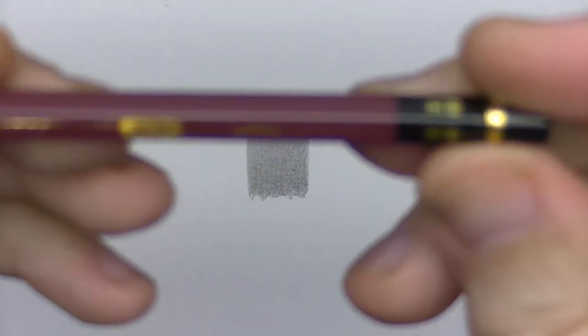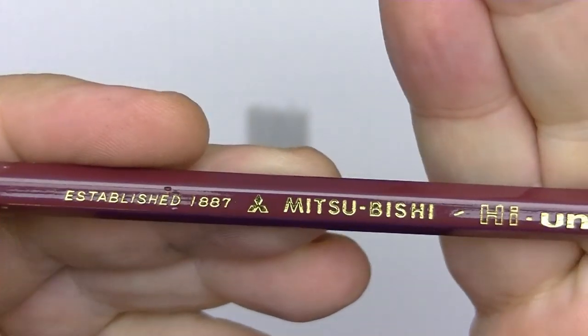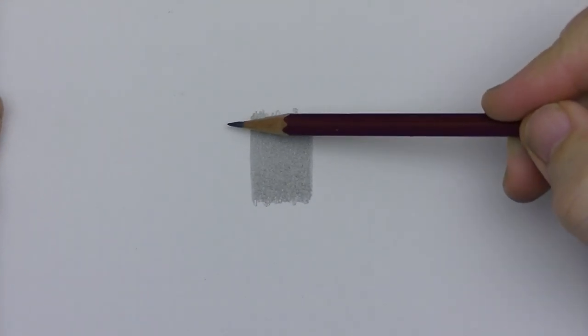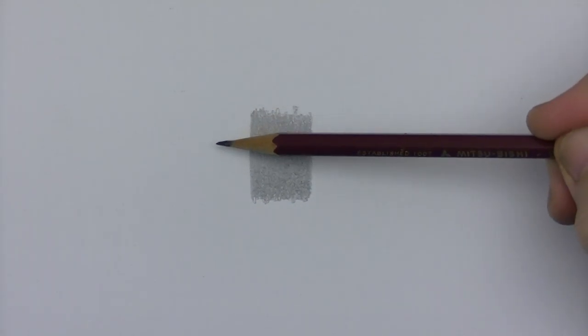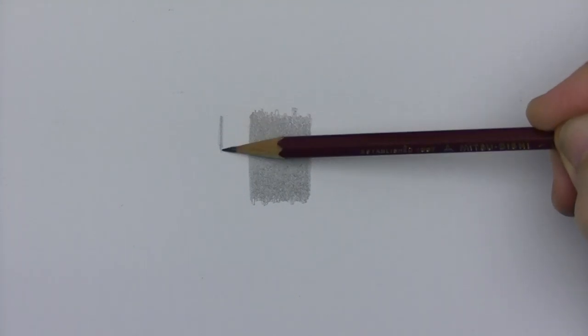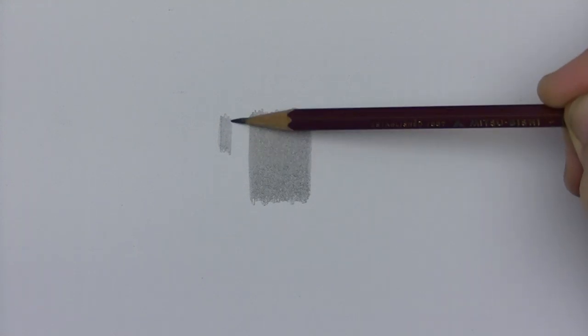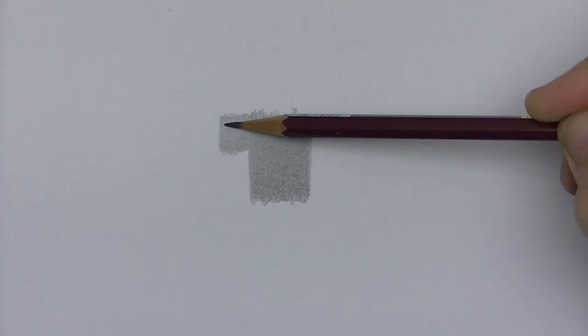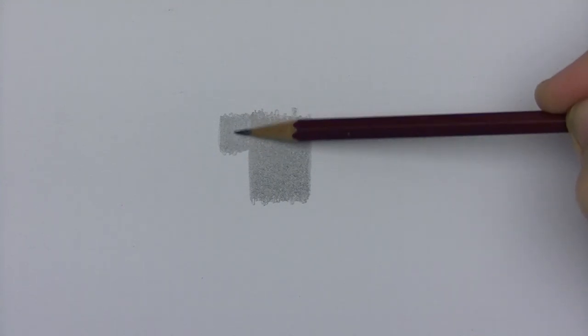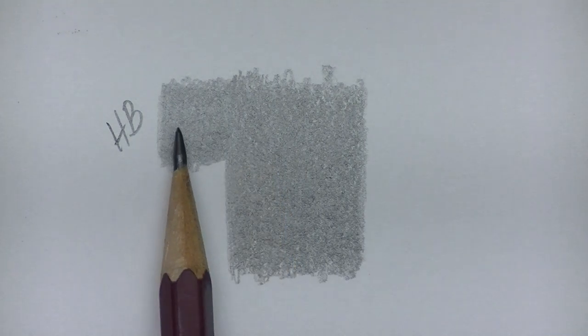I'm going to draw over here to the side and we'll be able to compare directly. I'm just going to saturate it as much as I can and get all the white of the paper out. I can tell that the HB is lighter. I'll zoom in here so that you can see for yourself the difference between those two. That is slightly lighter than that.